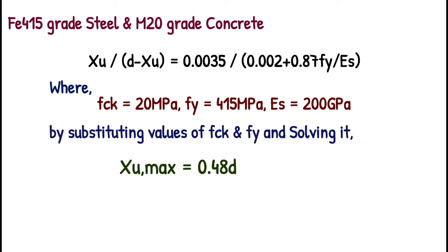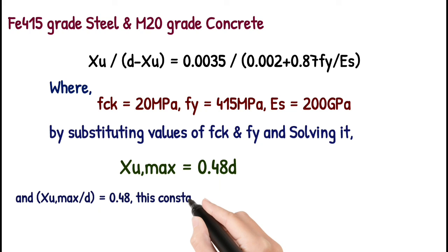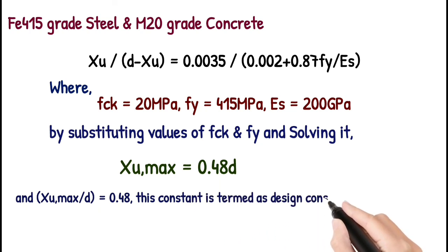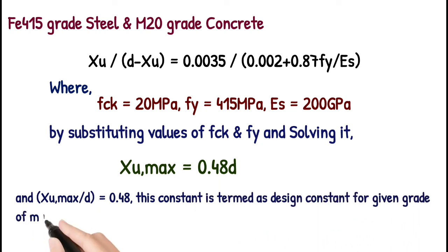This ratio Xu max by d that equals 0.48 is termed as constant or design constant for the given grade of material. Likewise we can obtain Xu max or Ku max values for different grades of material.